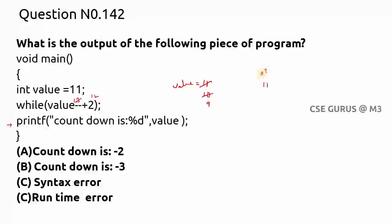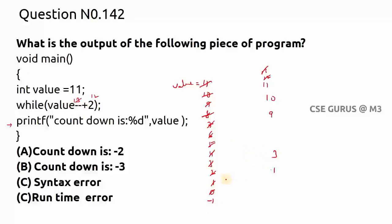Continuing the loop: values go 11, 10, 9, 8, 7, 6, 5, 4, 3, 2, 1, 0. When value is 0: 0 + 2 = 2, non-zero, so the loop continues and value becomes -1. Then -1 + 2 = 1, non-zero, so the loop continues and value becomes -2.